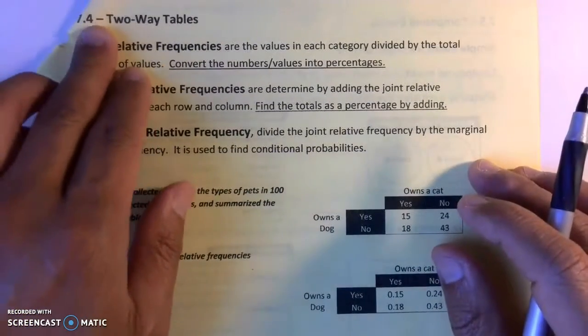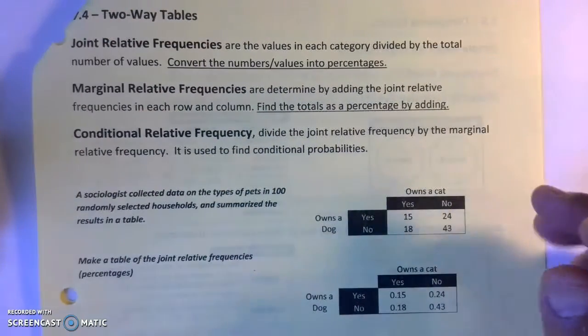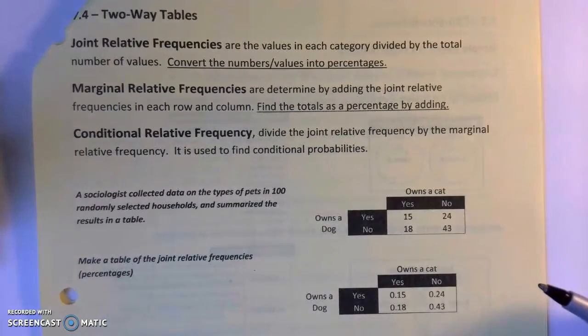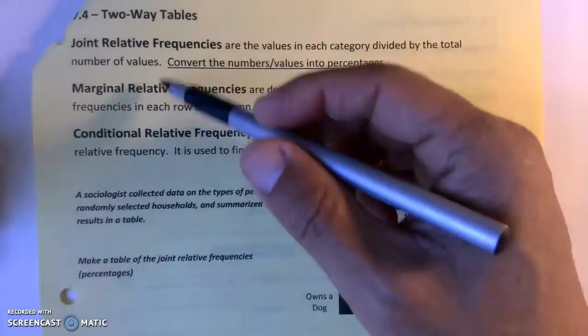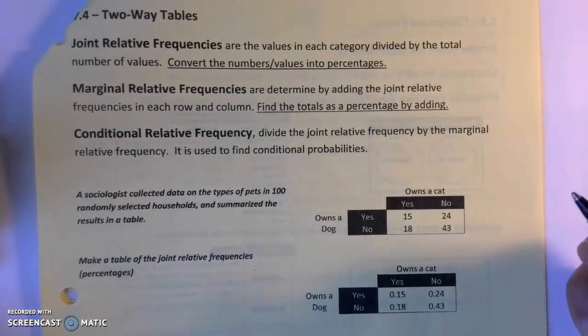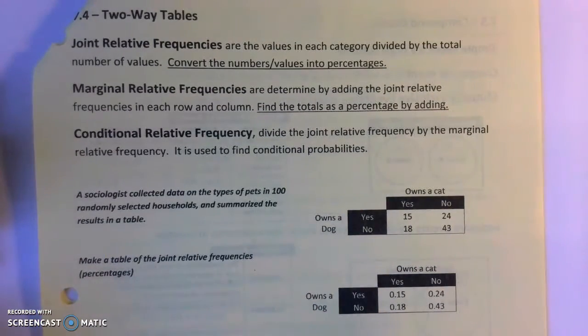We're going to put the notes for 7-4, two-way tables. There's going to be some crazy terms to start with, but ultimately a lot of these terms are kind of useless. This is just probability stuff with a table giving you all the numbers.